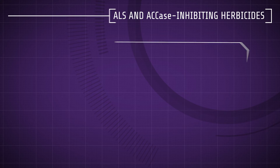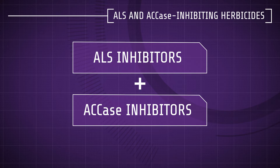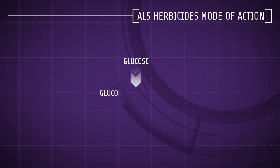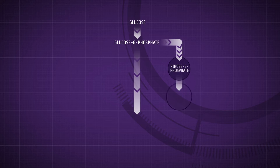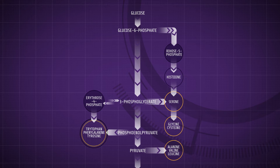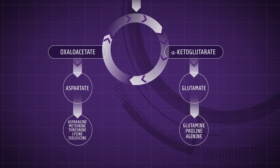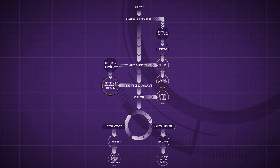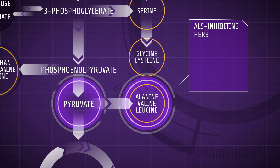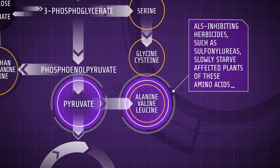There are two major groups of chemistry for the control of grass weeds, which disrupt two different enzymes within the plant: ALS inhibitors and ACCase inhibitors. The acetylactate synthase, or ALS enzyme, catalyzes the first step in the synthesis of the branched chain amino acids. ALS inhibiting herbicides, such as sulfonylureas, slowly starve affected plants of these amino acids, which eventually leads to inhibition of DNA synthesis.